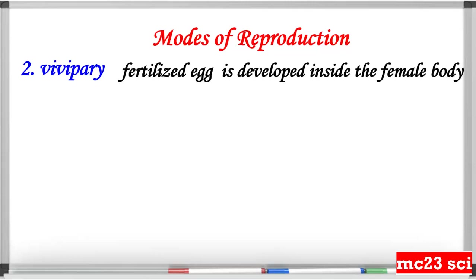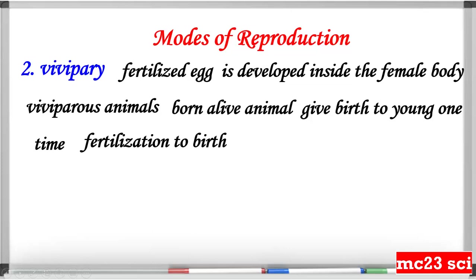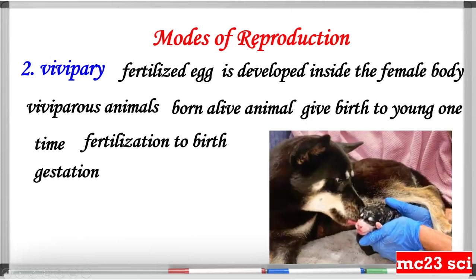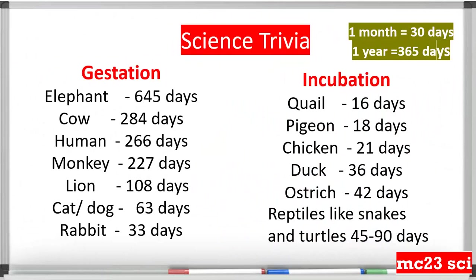The second mode is viviparous, wherein the fertilized egg develops inside the female body. Animals that undergo viviparity are called viviparous animals, or born-alive animals, where the female animal gives birth to a young one. The time period from fertilization to birth is called the gestation period. This is common in most mammals — dogs, cats, cows, and other animals.